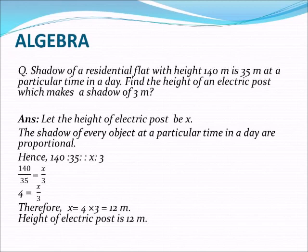So 140:35 is proportional to x:3, that means 140 divided by 35 is equal to x by 3. 140 by 35 is 4, it is divisible by 35, so 4 is equal to x by 3.